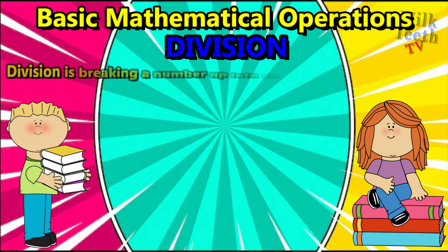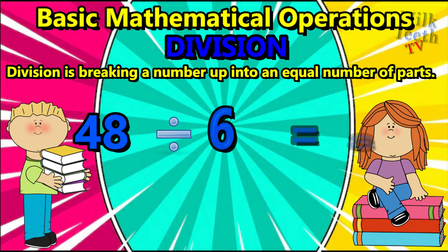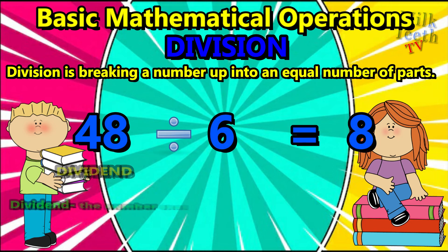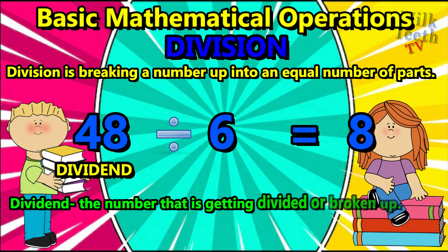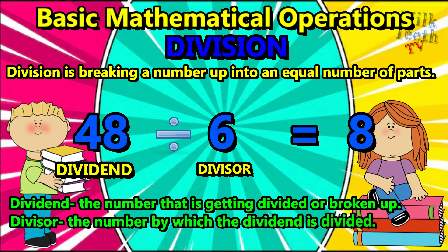Division is breaking a number up into an equal number of parts. For example, 48 divided by six equals eight. Here, 48 is the dividend — that is the number that is getting divided or broken up — and six is the divisor, the number by which the dividend is divided.